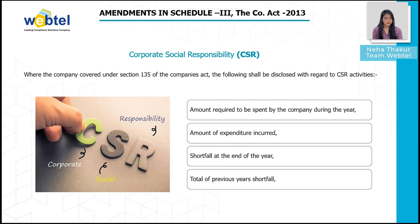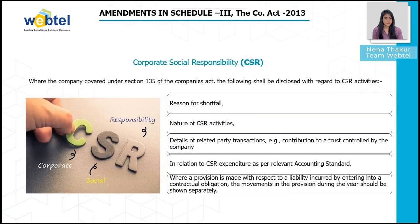The next amendment covers Corporate Social Responsibility (CSR). Where the company is covered under Section 135 of the Companies Act, the following shall be disclosed with regard to CSR activities: amount required to be spent by the company during the year, amount of expenditure incurred, shortfall at the end of the year, total of previous years' shortfall, reason for shortfall, nature of CSR activities, and details of related party transactions such as contribution to a trust controlled by the company in relation to CSR expenditure, as per the relevant accounting standard.